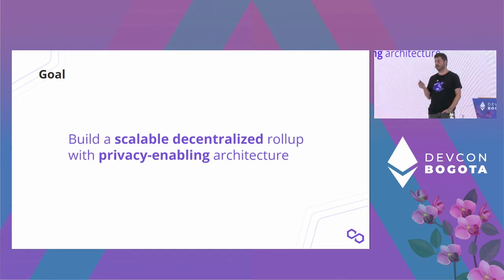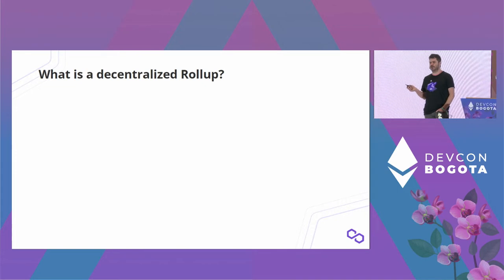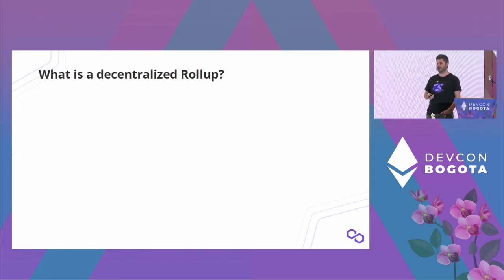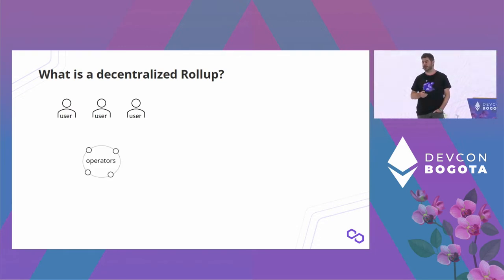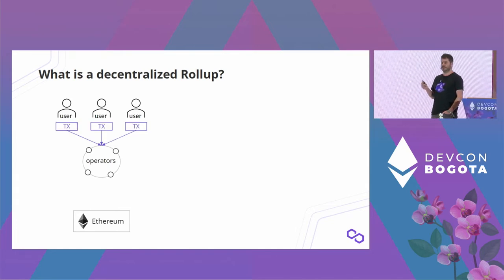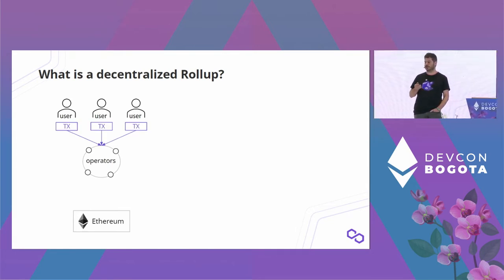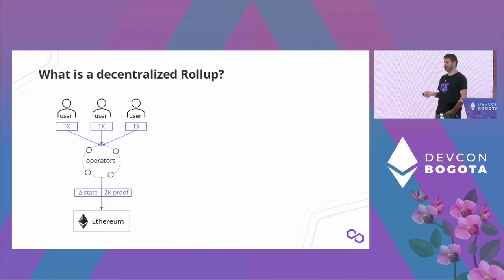Just to set the context of what a decentralized rollup is: we have users, we have rollup operators, and we have Ethereum L1. In this model, users send transactions to the operators, operators aggregate those transactions into blocks, and then they submit the state delta — in the context of a ZK rollup, with a ZK proof — to Ethereum L1.